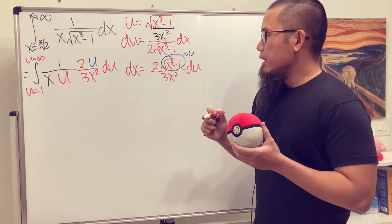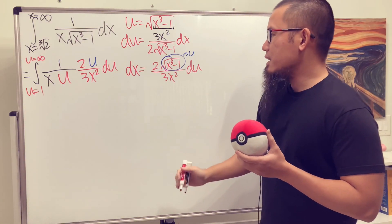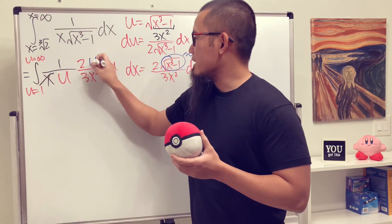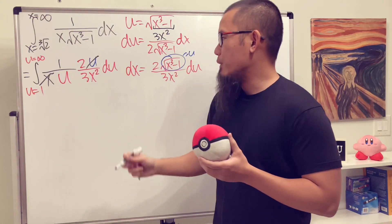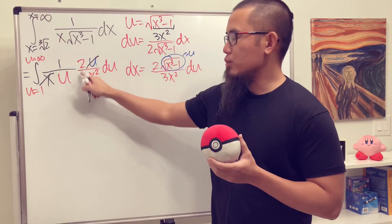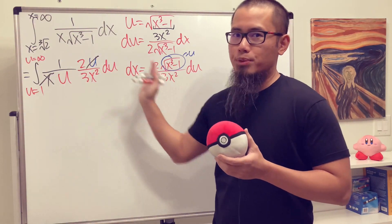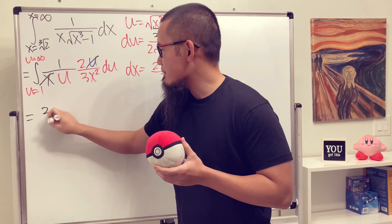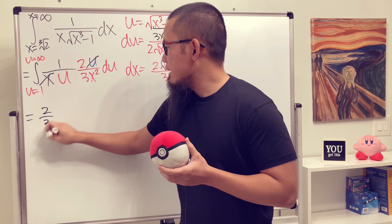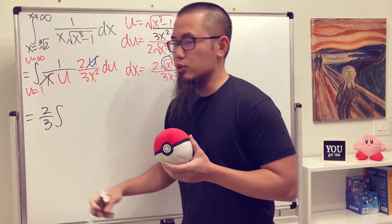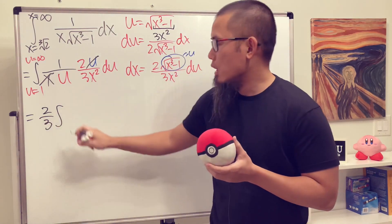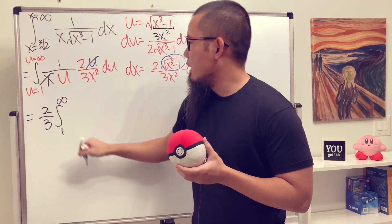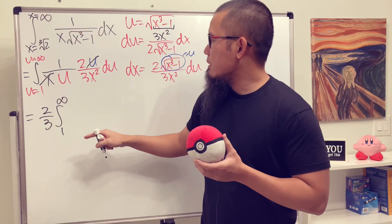The x terms cancel very nicely and we have 2/3, so let's put that outside of the integral. Then we go ahead and finish everything in the u-world, integrating from 1 to infinity.